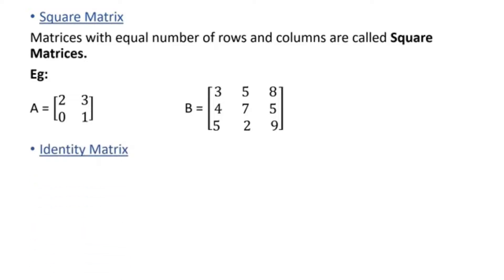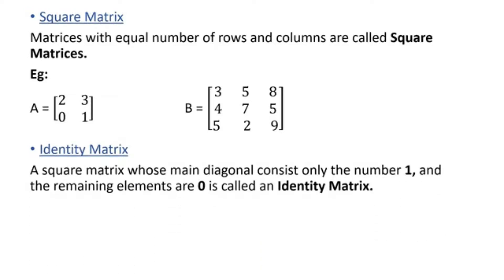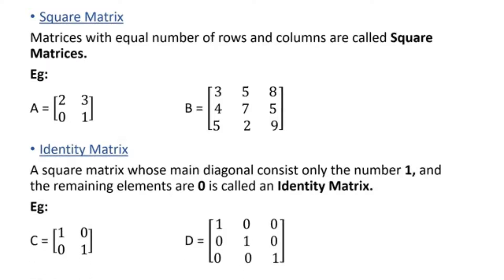The next type of matrix is the identity matrix, which is a little special. A square matrix whose main diagonal consists only of the number one and whose remaining elements are all zero is called an identity matrix. Looking at matrices C and D, the main diagonals contain only the number one, and all other elements are zero.